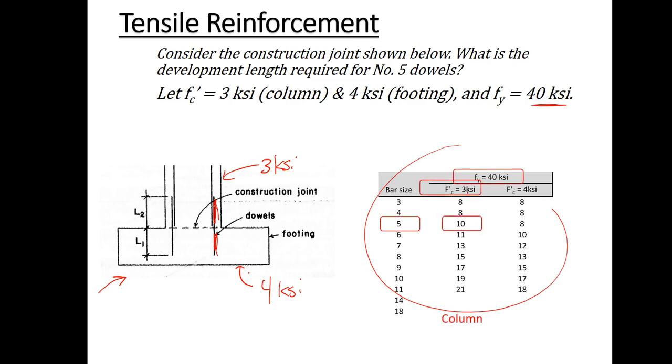40 KSI steel, three KSI concrete, bar size of five for the dowels. We've got to embed 10 inches into the column. And if we run the same thing for the footing, we'd only have to go eight inches into the footing because the concrete's a little bit stronger. I don't have to transfer that load nearly as far in.